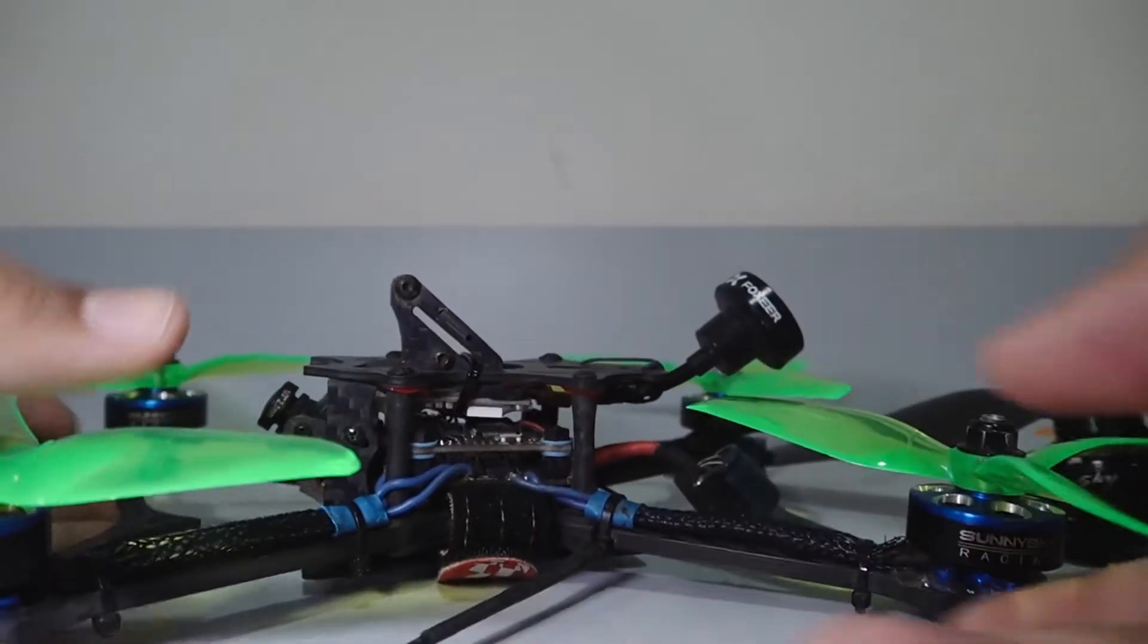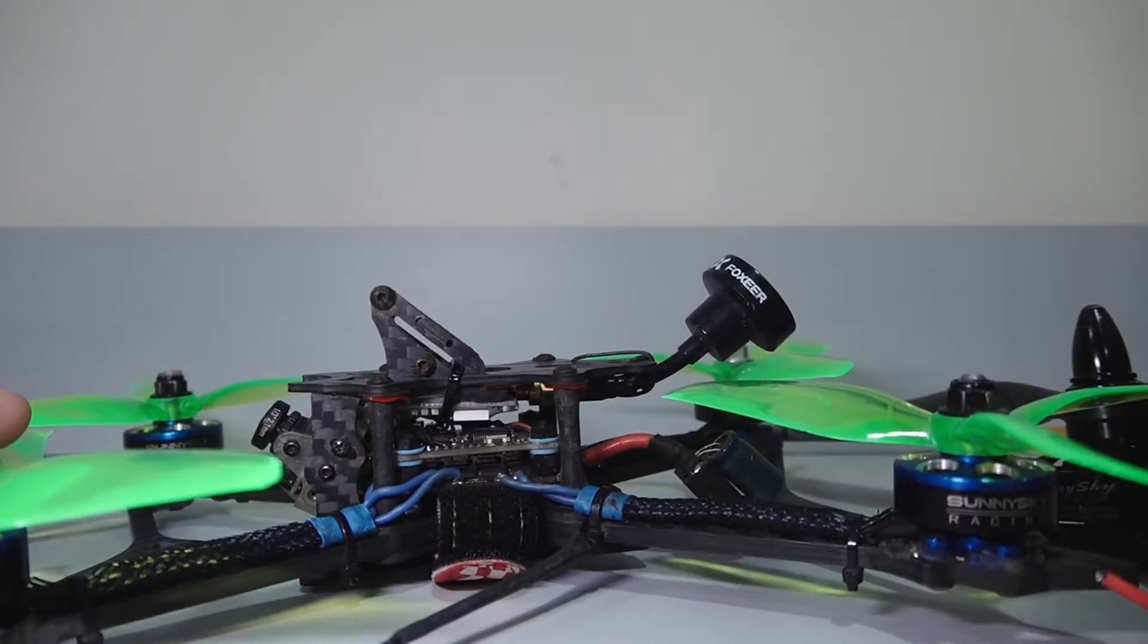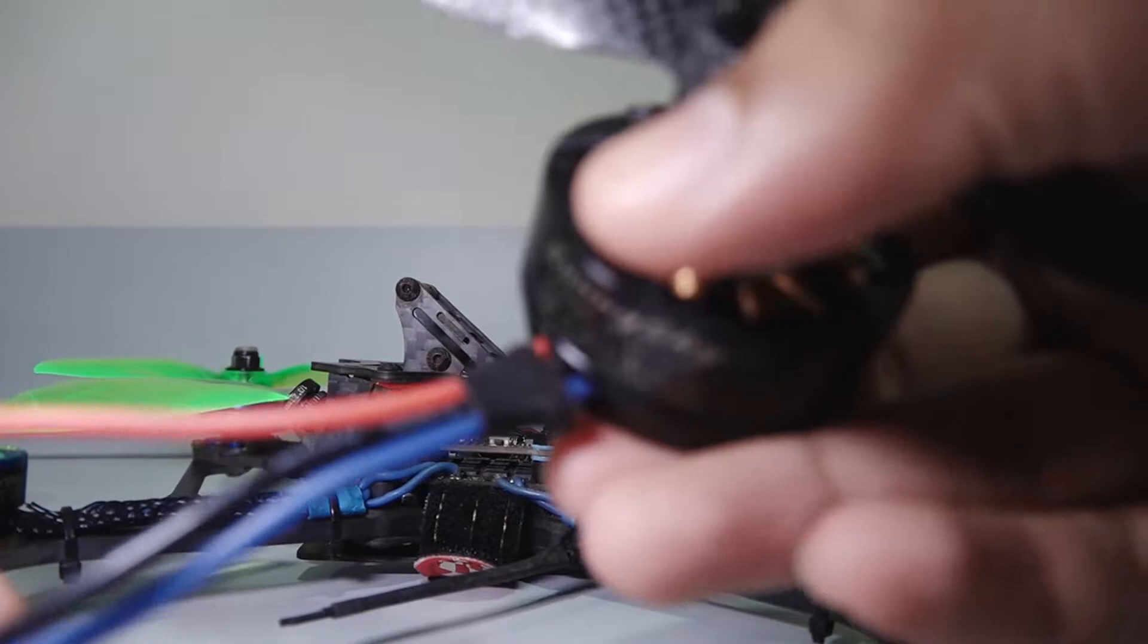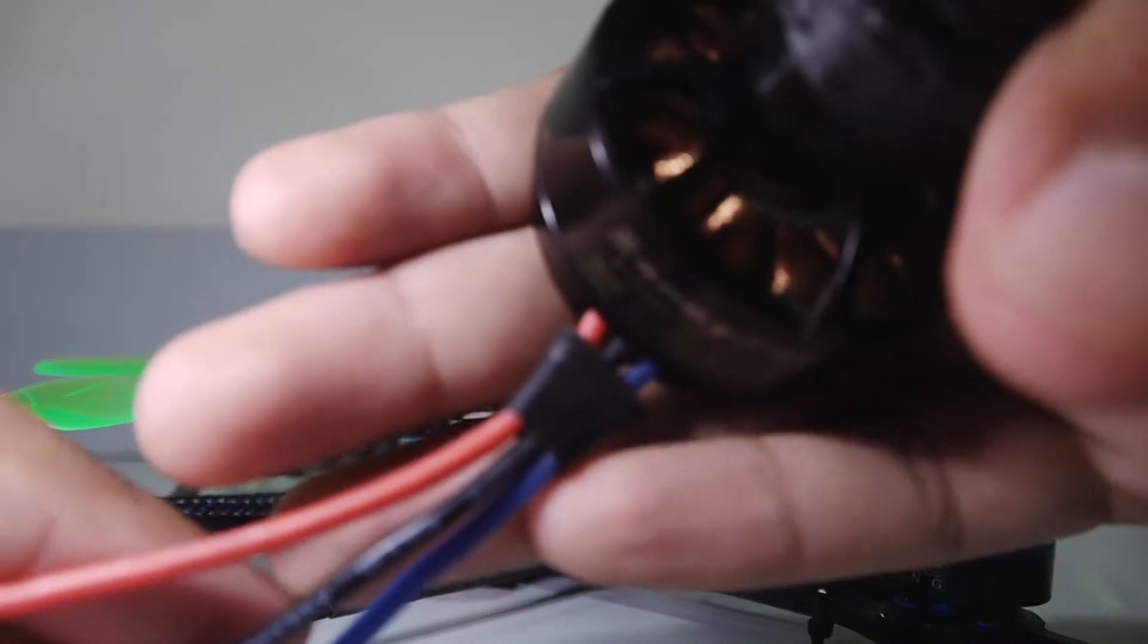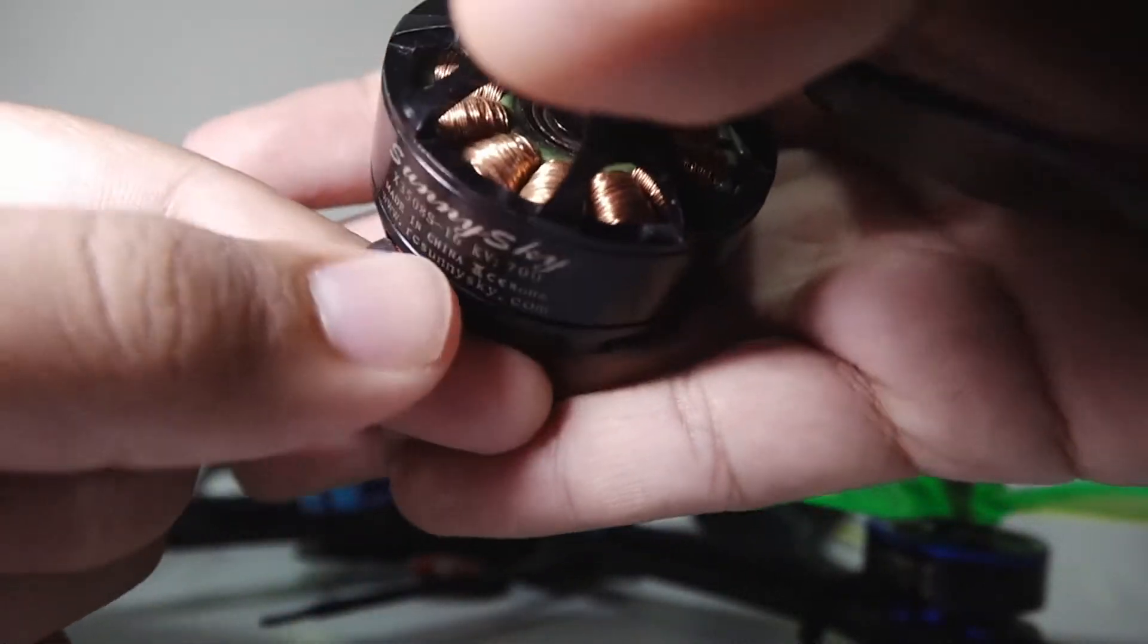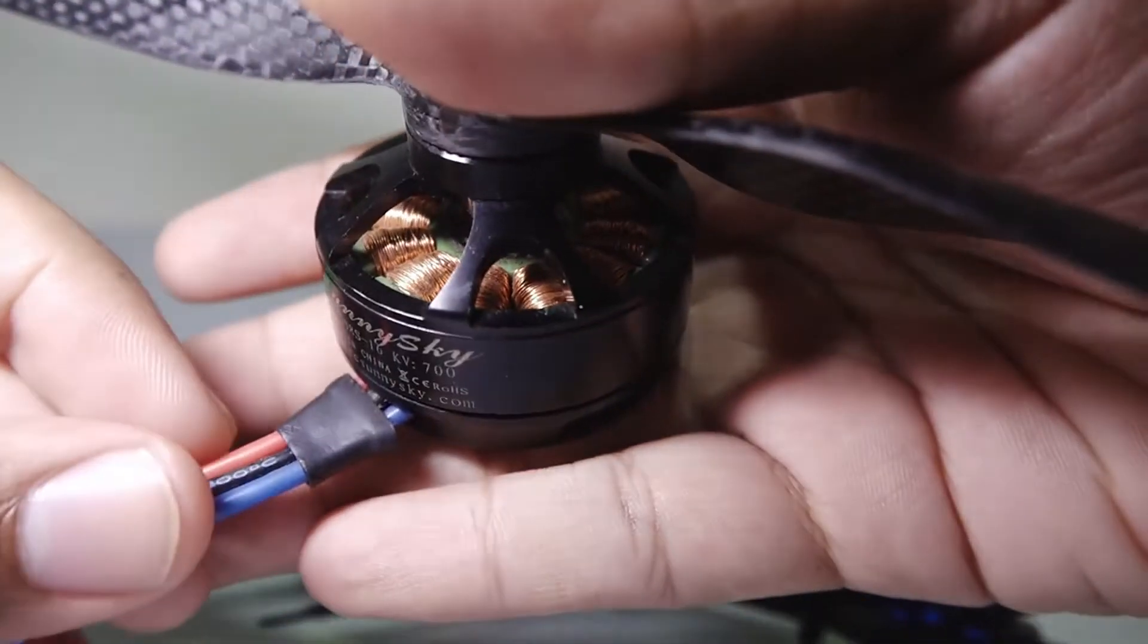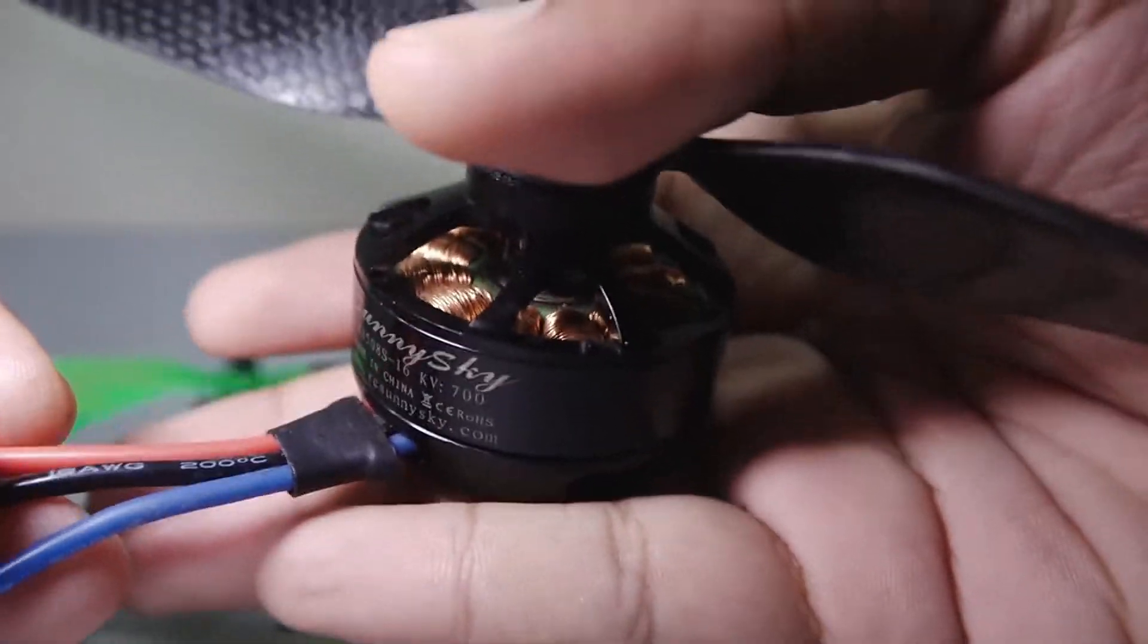The motors normally used in a drone are called brushless DC motors, short for BLDC. Unlike a DC motor, they have three wires coming out. These three wires control three sets of electromagnets on the stator. The spinning action results from turning these magnets on and off very rapidly in a sequence.